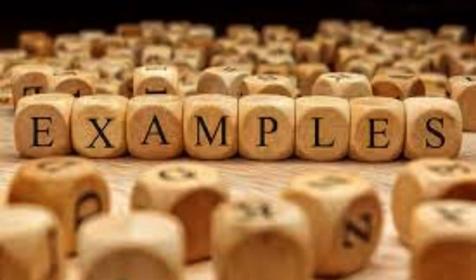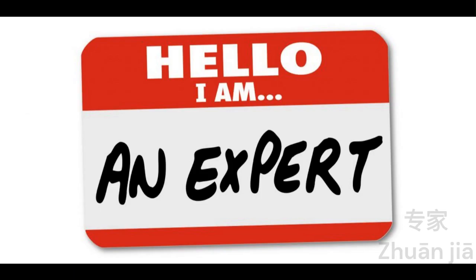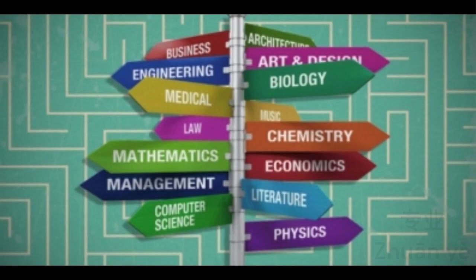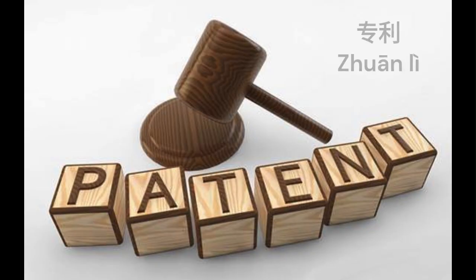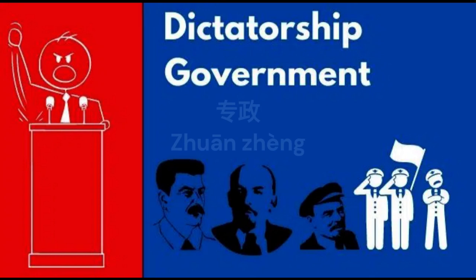Now let's see some examples. 专家, expert or specialist. 专业, major field of study. 专门, adjective or adverb meaning specialized or specially. 专利, patent. 专政, dictatorship.